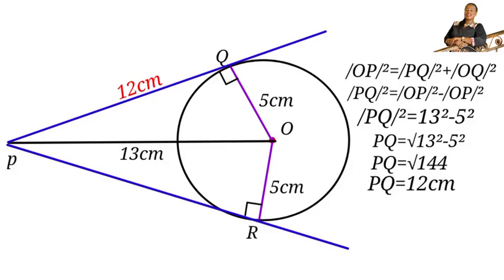So we have gotten the length of PQ. Now we have to find the length of PR. Since the hypotenuse of PR is also 13 and the radius is also 5 centimeters, if we calculate, PR will also be 12 centimeters.